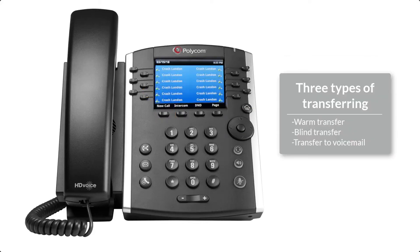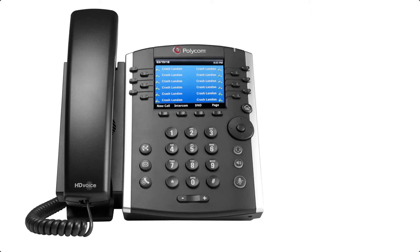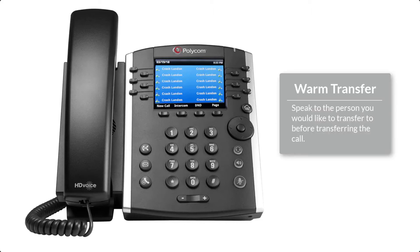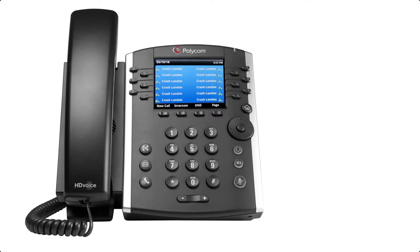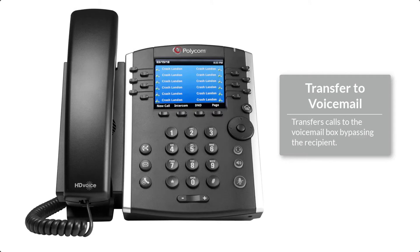These phones offer three different types of transfers: warm transfer, blind transfer, and transfer to voicemail. A warm transfer allows you to speak to the agent or person before transferring the call. A blind transfer is a direct transfer without introduction — there is no interaction between you and the person you are transferring to. Transfer to voicemail allows you to transfer the caller to the voicemail box of a person in your phone system, bypassing the recipient.